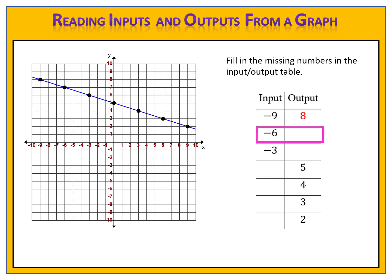Let's look at the second. This time we have an input of negative 6. That means on our graph we have a point where the x is negative 6, and we want to find the y value, which is the output. The input x is negative 6, so we go across our graph where x is negative 6 and draw our finger right up to that point. What is the y value at that point? The y value is 7, and so the point is negative 6, 7. That means the input is negative 6 and the output is positive 7.